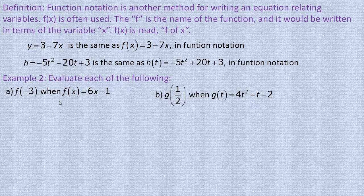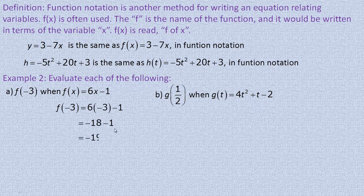In example 2, we evaluate functions. For part A, we're asked to find f of negative 3 when f of x equals 6x minus 1. That means putting negative 3 in place of x. A really common mistake is to forget and leave x there instead. So f of negative 3 equals 6 times negative 3 minus 1. 6 times negative 3 is negative 18, minus 1 is negative 19. The function's value at negative 3 is negative 19.